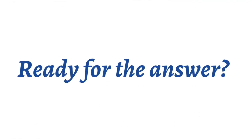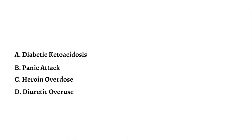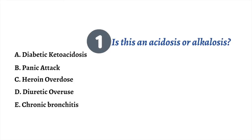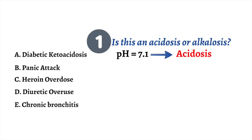Alright, now that you've had some time to ponder your answer, let's go over the question. By the question alone, we can tell we need to interpret this ABG to figure out the answer. The first step in interpretation is to figure out if the patient is acidotic or alkalotic, as each answer has a completely different differential. Normal pH varies from about 7.35 to 7.45. In the case of this lady, she has a pH of 7.1, meaning she is acidotic.